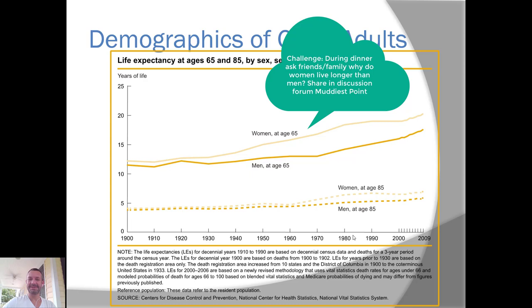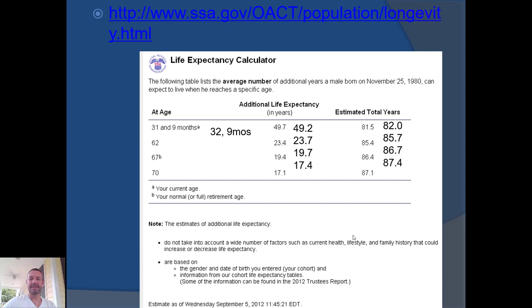This is a life expectancy calculator that you can mess around with. I've been tracking myself over the years. Essentially, you input your current age and see the additional years you're expected to live and your estimated total years. For example, when I did this at age 31 and 9 months, my life expectancy was 81 and a half. If I make it to 62, my life expectancy would increase to 85. Definitely play around with that.